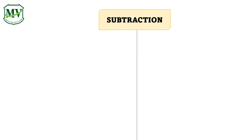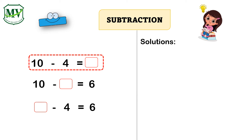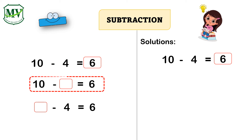Let us find out the unknown numbers from the following subtraction number sentences. First, 10 minus 4 equals what unknown number? Subtract 4 from 10: 10 minus 4 equals 6. 6 is the unknown number. Next, 10 minus unknown number equals 6. If the number being subtracted is the unknown, subtract the difference 6 from the minuend 10. 10 minus 6 is 4. 4 is the unknown number.